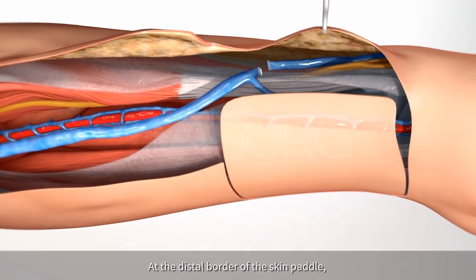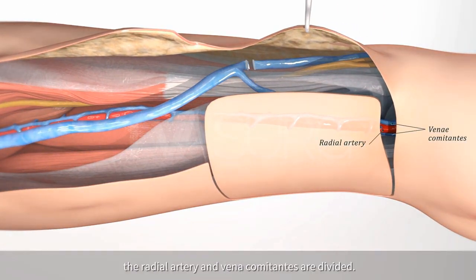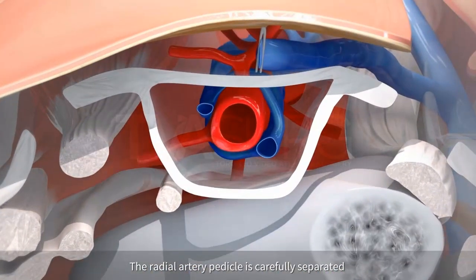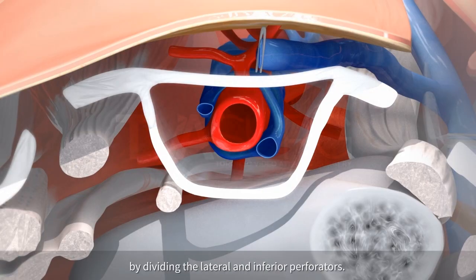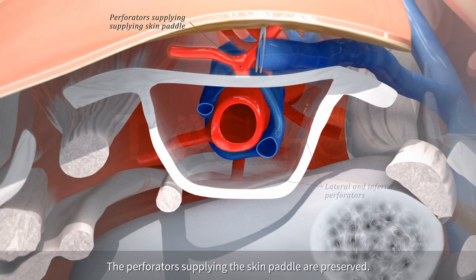At the distal border of the skin paddle, the radial artery and venae comitantes are divided. The radial artery pedicle is carefully separated from the deep fascia by dividing the lateral and inferior perforators. The perforators supplying the skin paddle are preserved.